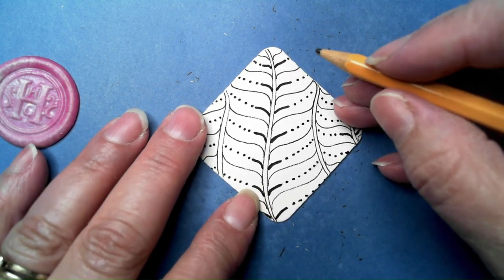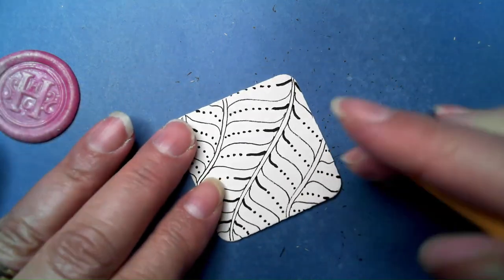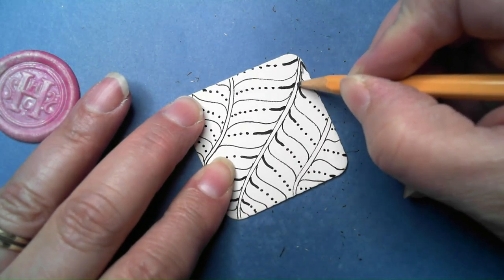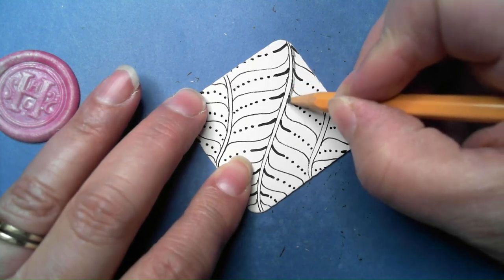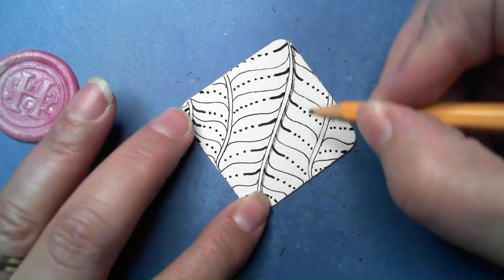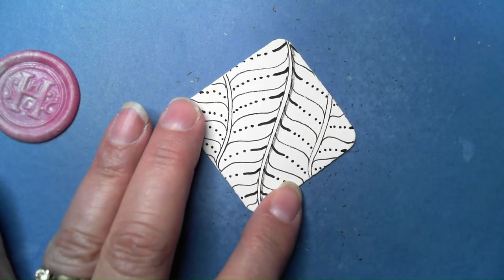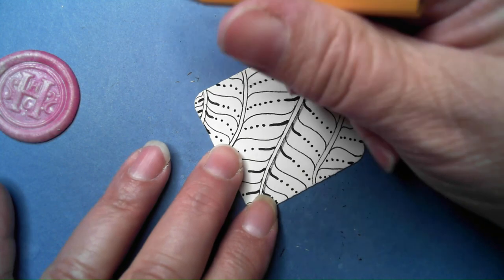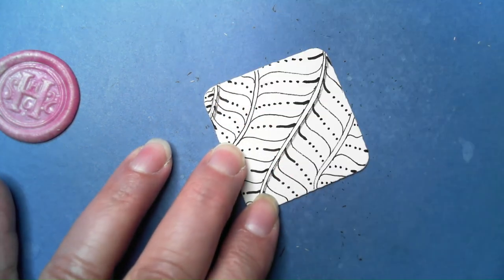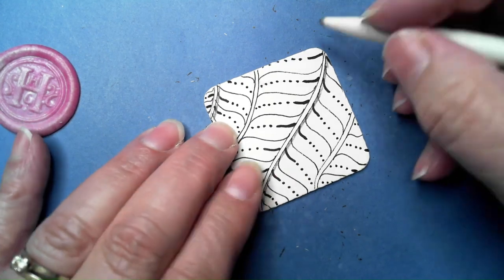In my Zentology where I got the step out from Zentangle, it just has you doing the shading on one side. You could do both sides, but this is really neat.